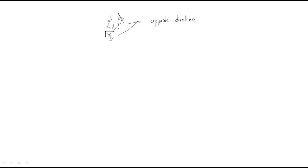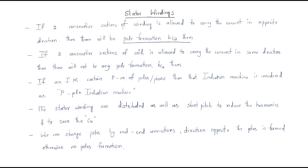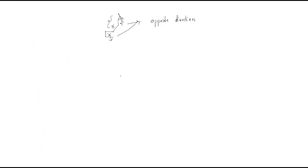Next important point: if two consecutive sections of a coil carry current in the same direction — unlike the first point where it was opposite — then there will not be any pole formation between them. For example, if both sections have current going inside, there is no pole formation.